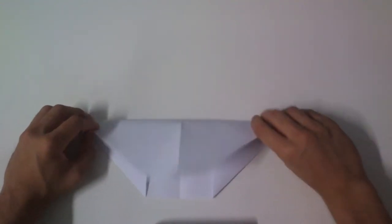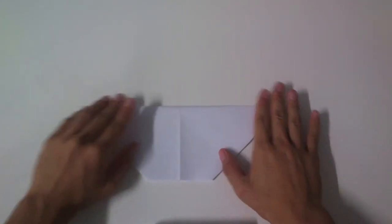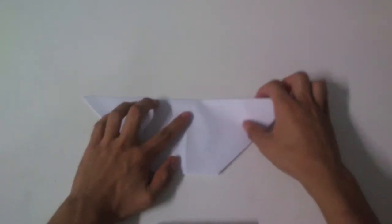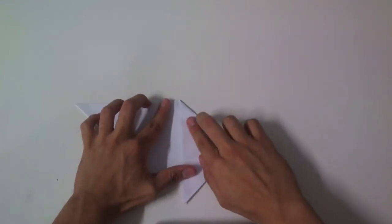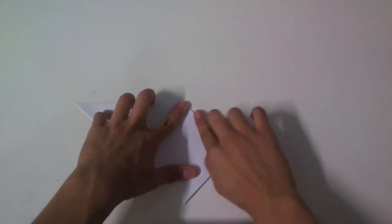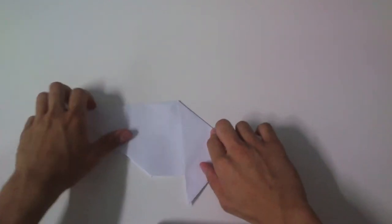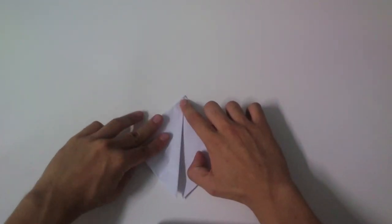First flip down the upper parts. And the next step is to flip down the right side to the center like this, and then go to the left side.